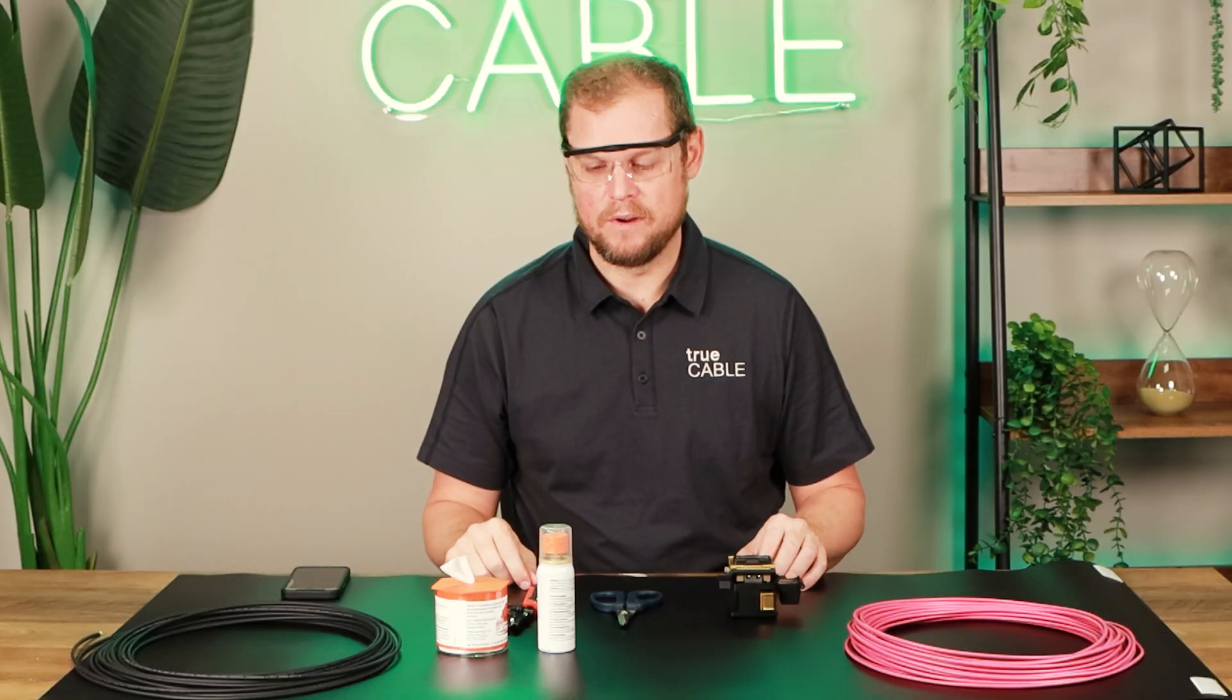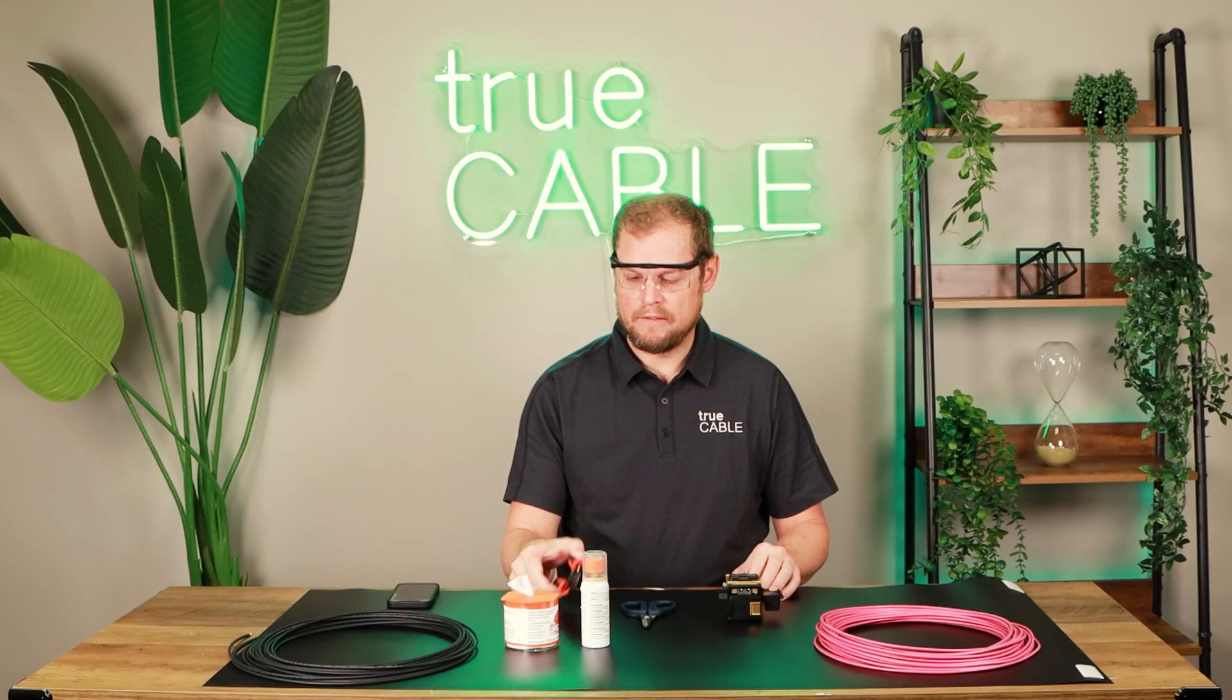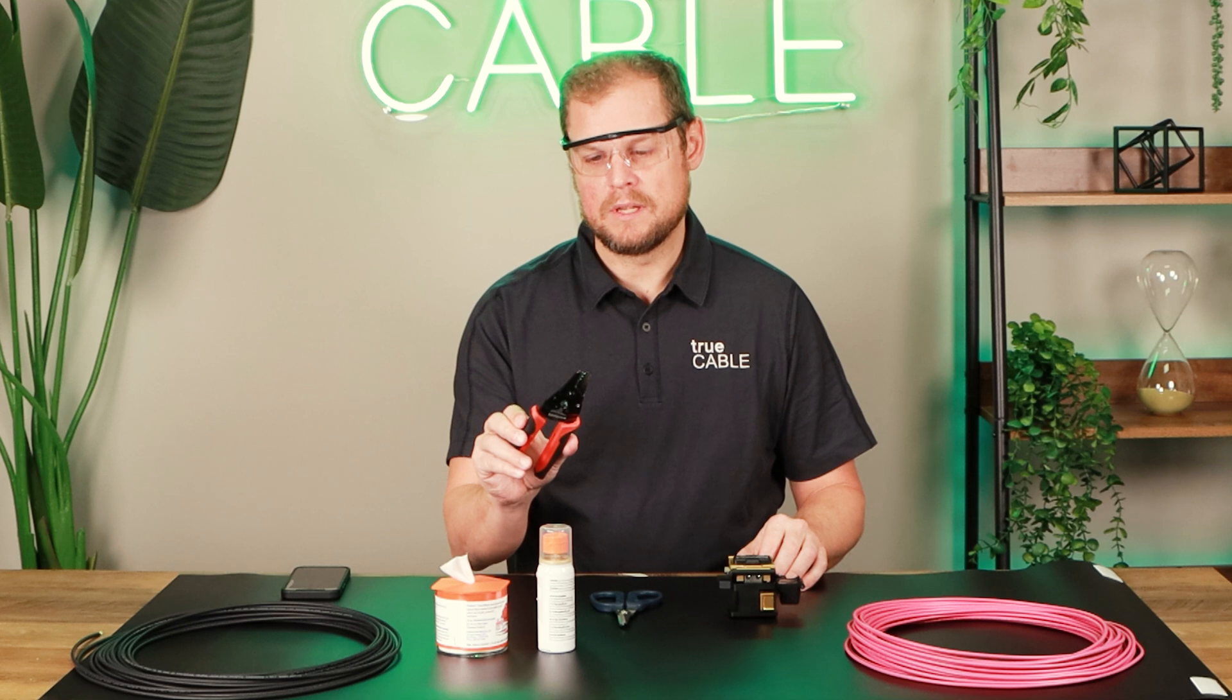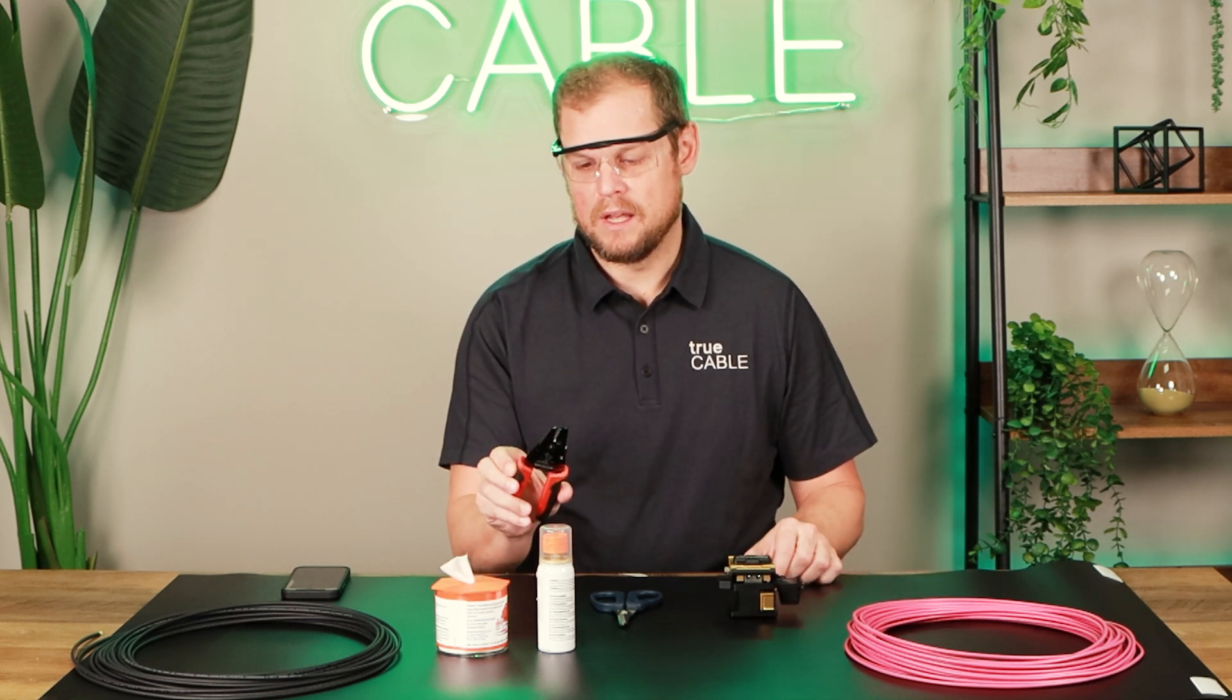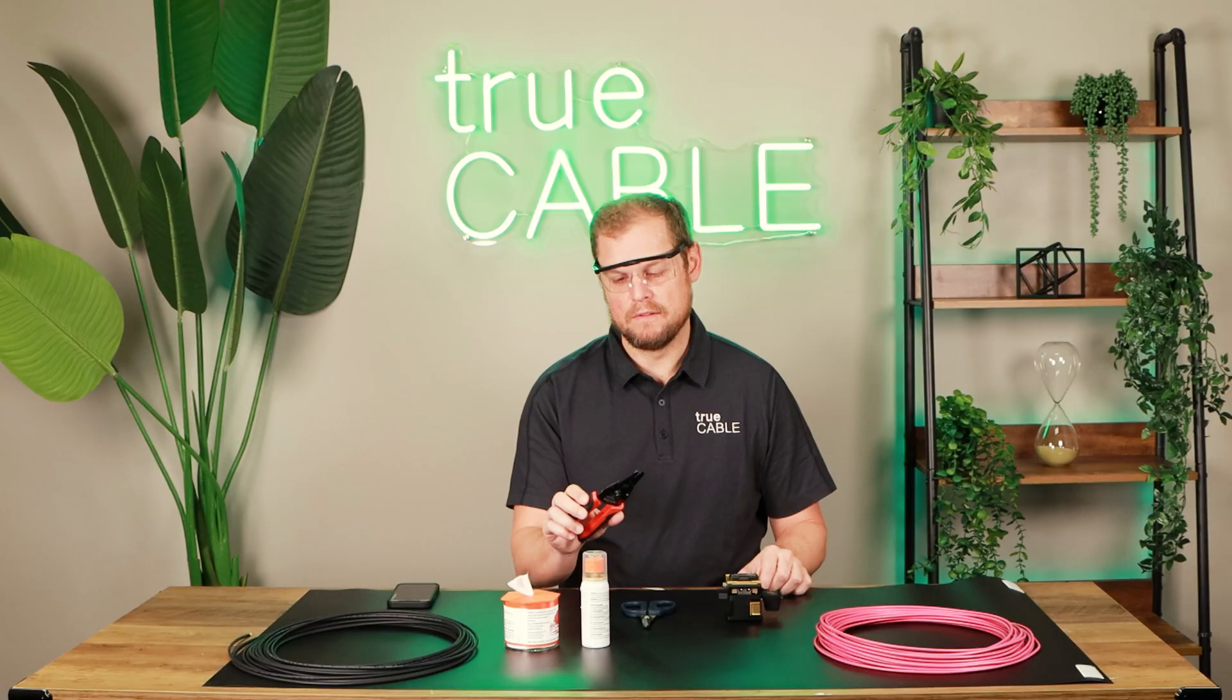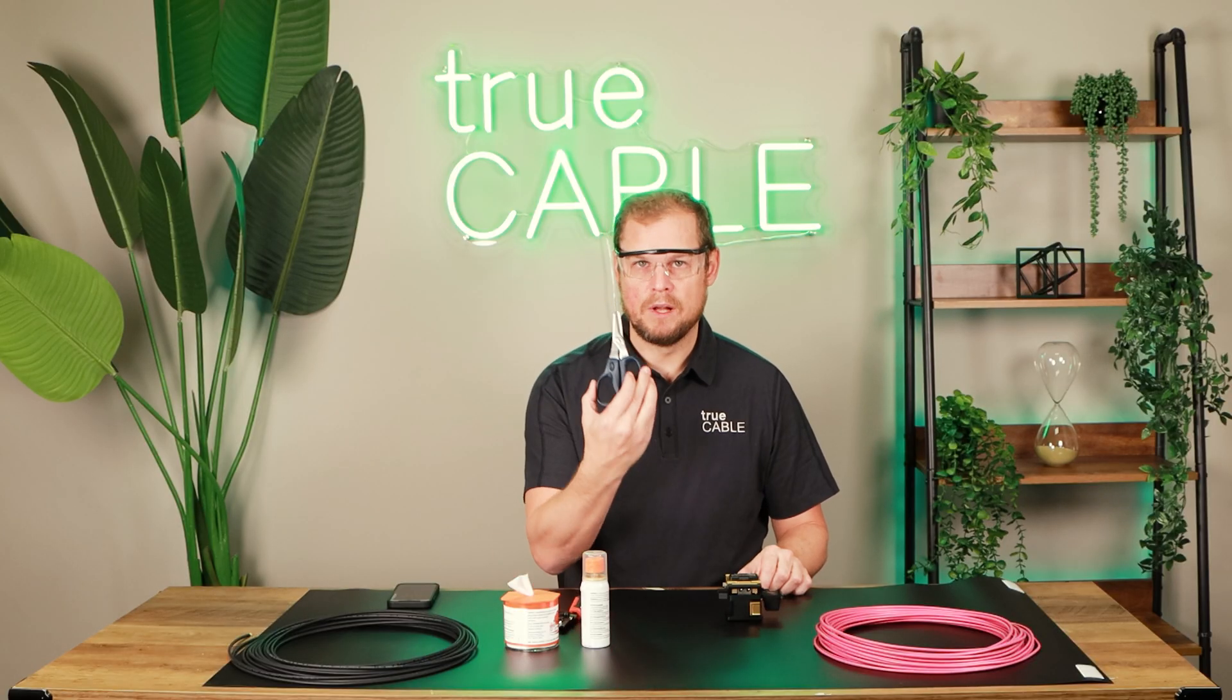Next, we're going to make sure and have our cable cutter. So this has our 2 and 3 millimeter cutter for the jacket of the cabling, as well as stripping off 250 and 900 micron buffers, as well as our Kevlar cutters for our aramid strength member.